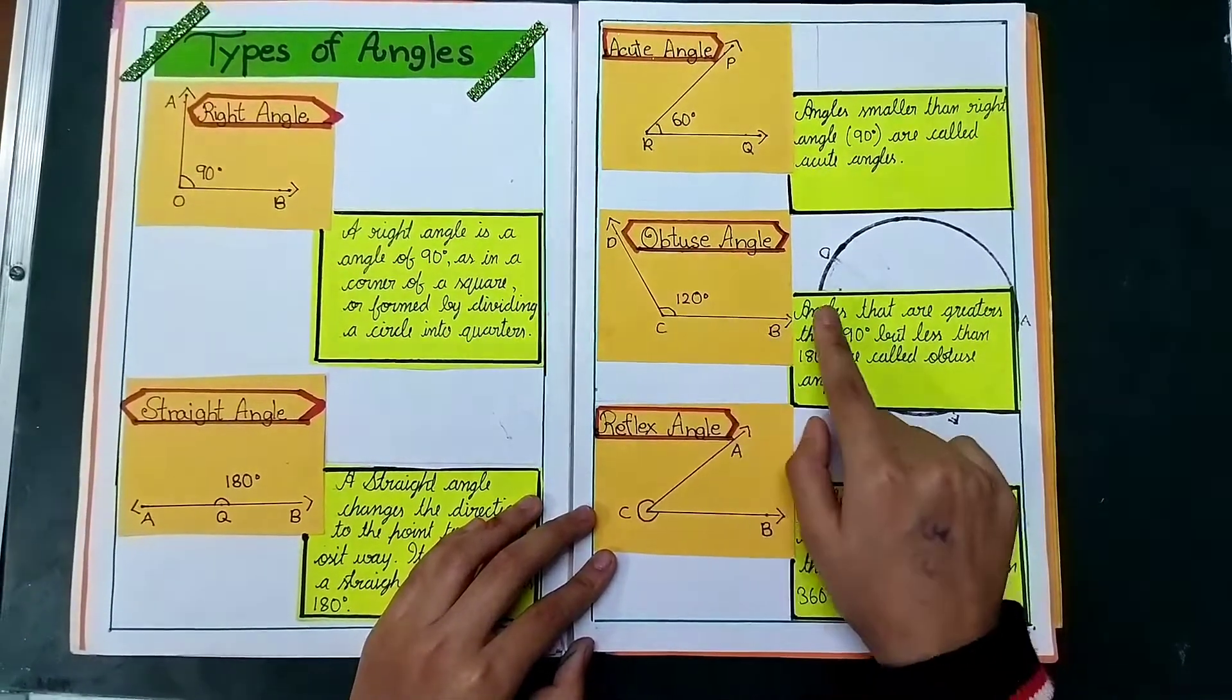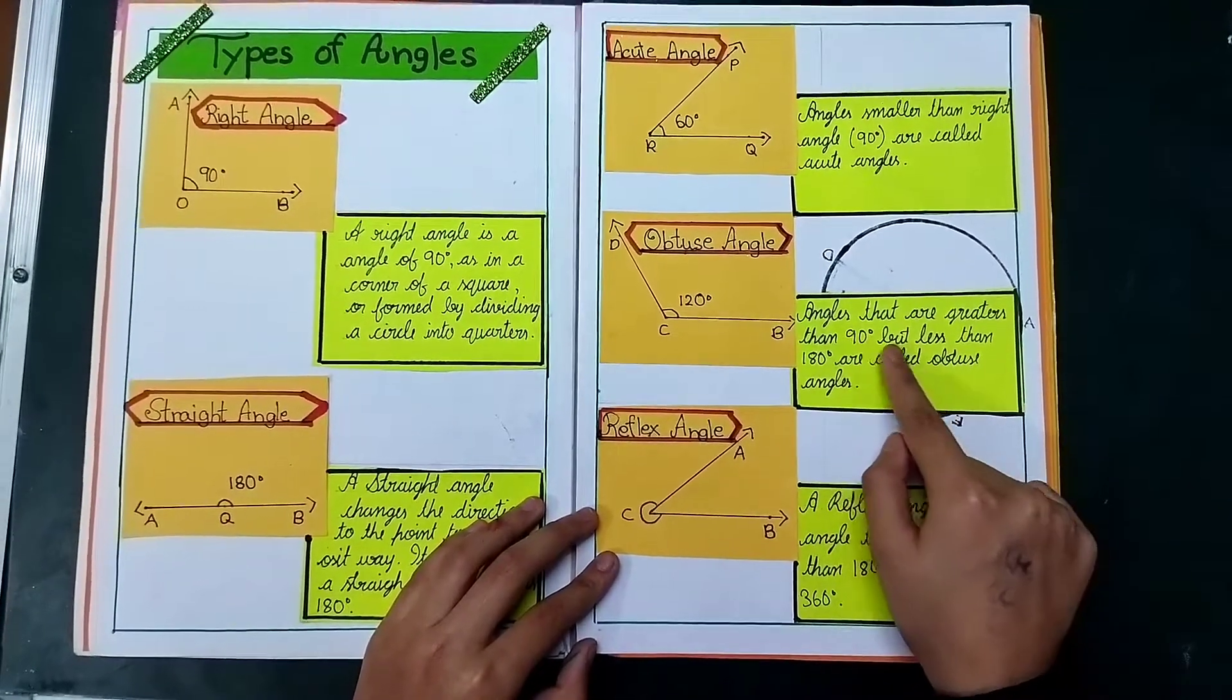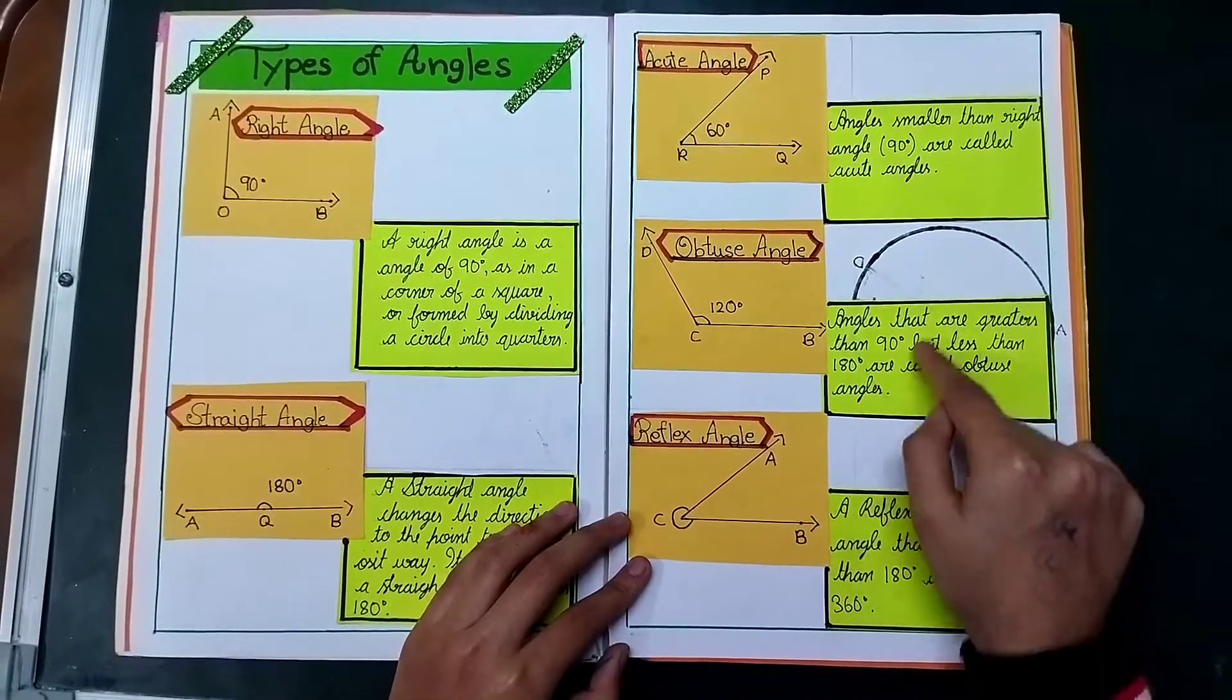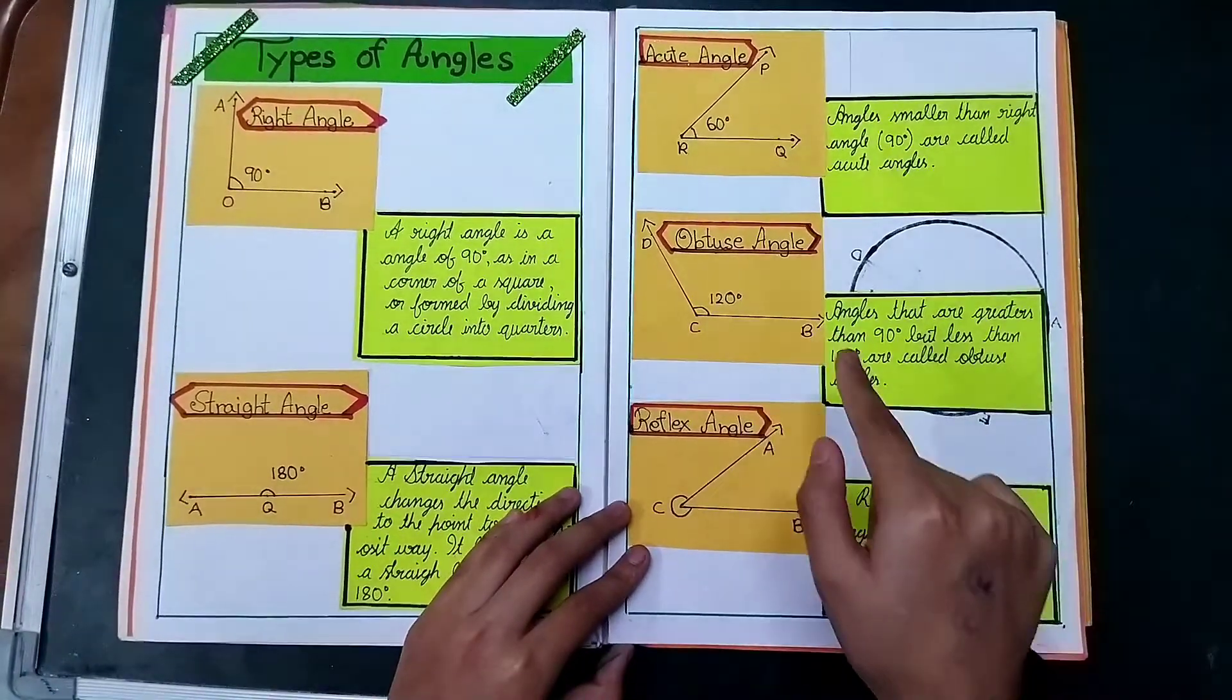Obtuse angle. Angles that are greater than 90 degree but less than 180 degree are called obtuse angles. Here is the definition of the obtuse angle.